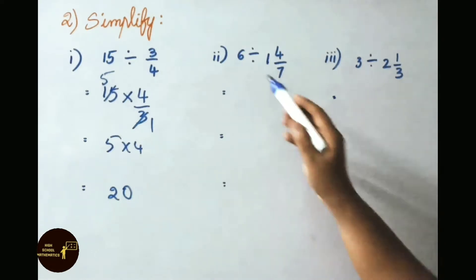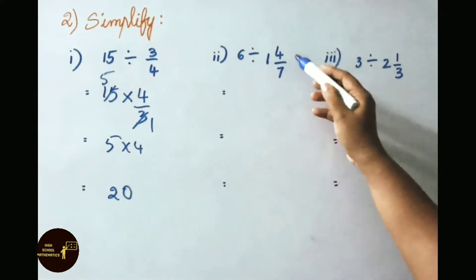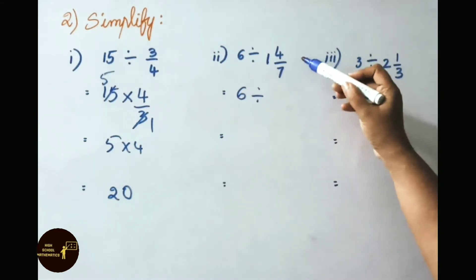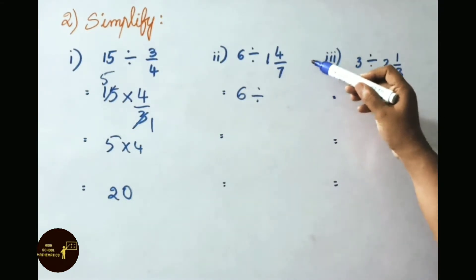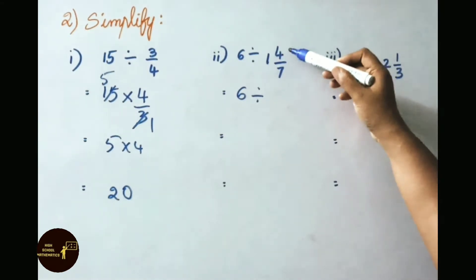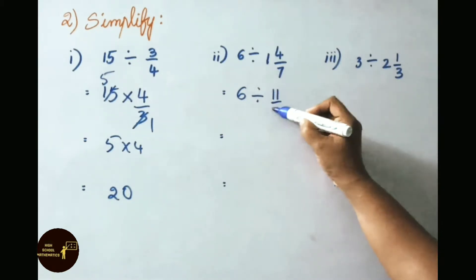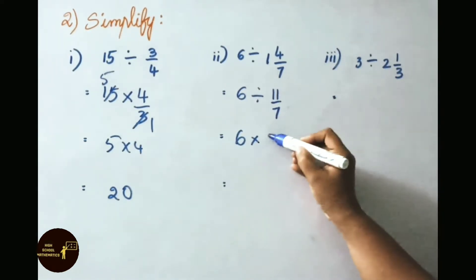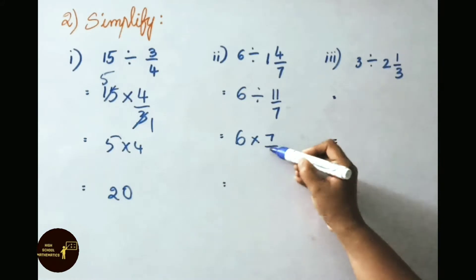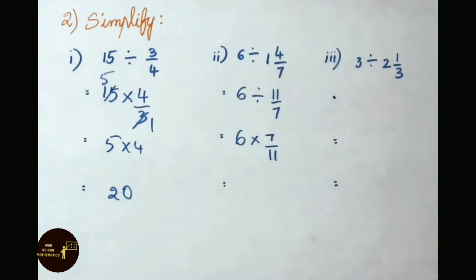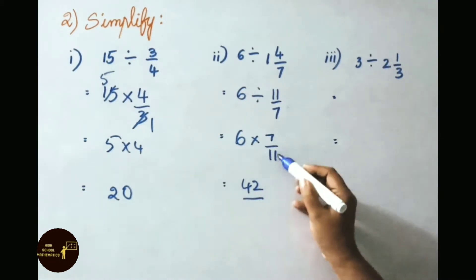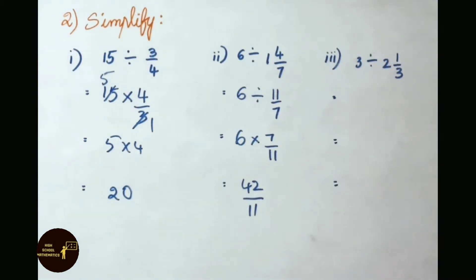See the second sum: 6 divided by 1 and 4 by 7. Write down 6 divided by, then convert the mixed fraction to improper: 7 ones are 7, plus 4 is 11 by 7. So write down 6 into the reciprocal of 11 by 7, which is 7 by 11. Multiply the numerators: 6 sevens are 42, by denominator 11. So the answer is 42 by 11.